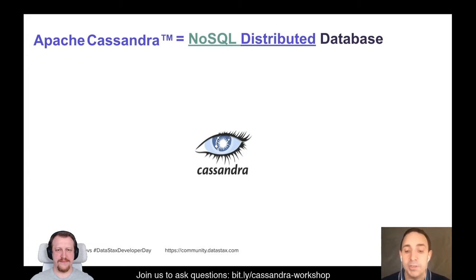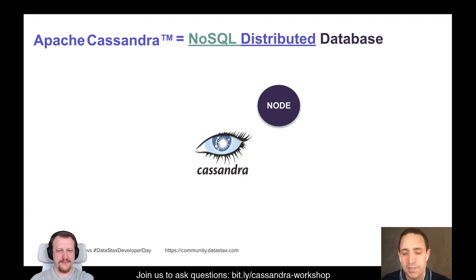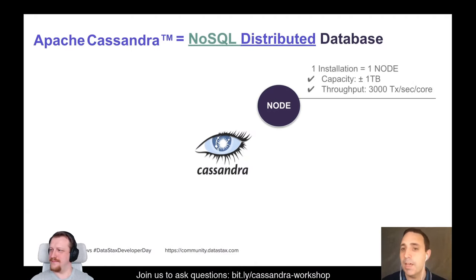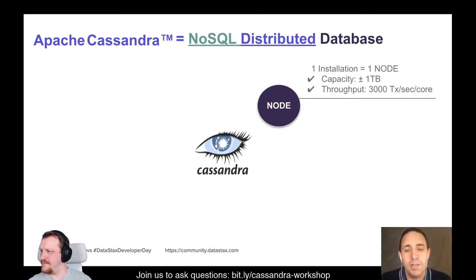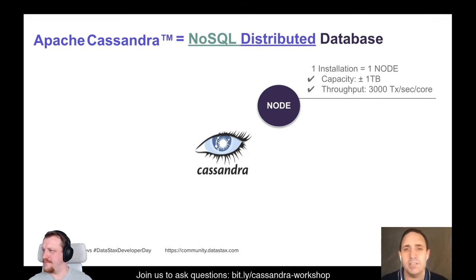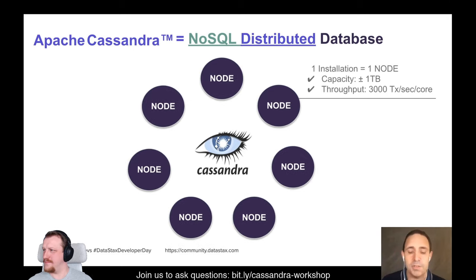And it's distributed. You can install Cassandra on a single node — technically it's feasible. On a single node you can store about one terabyte of data and do about 3,000 transactions per second per core. That's our rule of thumb. But as I said, it's distributed, and there's really no sense to install Cassandra only on a single node.